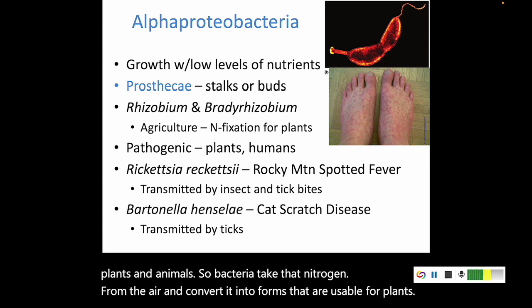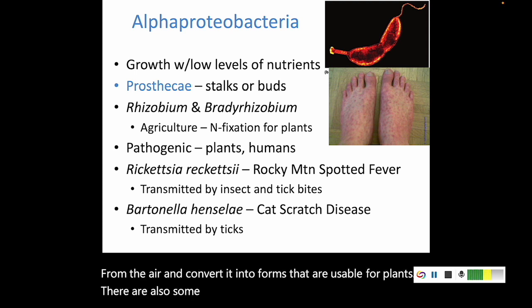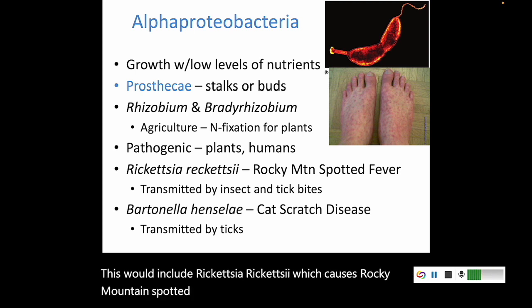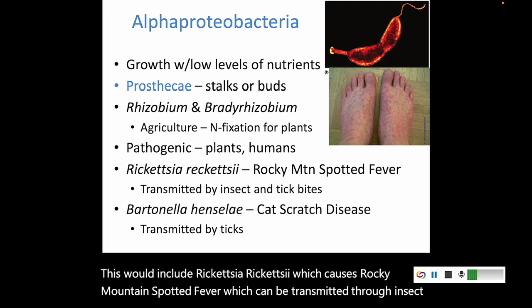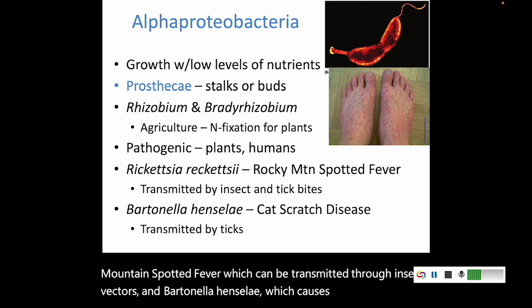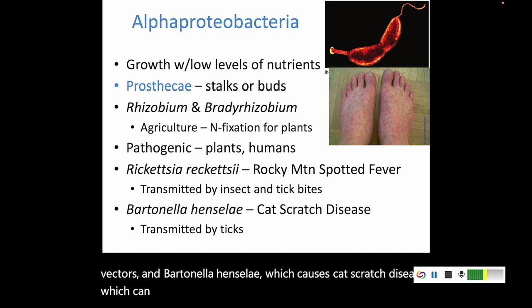There are also some alpha proteobacteria that are pathogenic to plants and animals. This would include Rickettsia rickettsii, which causes Rocky Mountain spotted fever and can be transmitted through insect vectors, and Bartonella henselae, which causes cat scratch disease, which can also be transmitted by insect vectors.